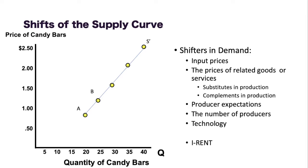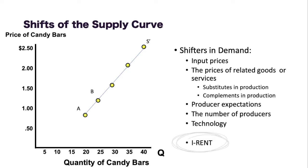There are five different shifters for supply: input prices, price of related goods or services, producer's expectations, number of producers, and technology. iRent is a good way to remember the different shifters.